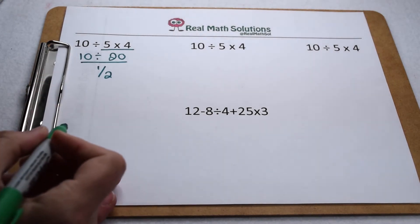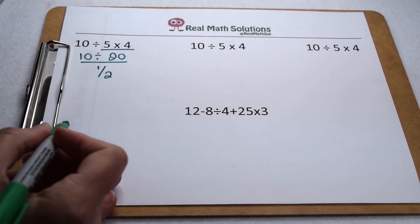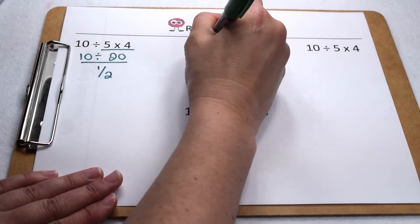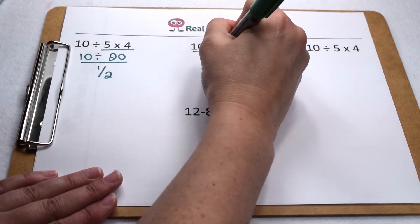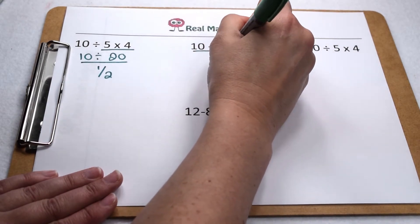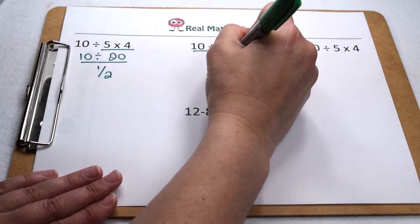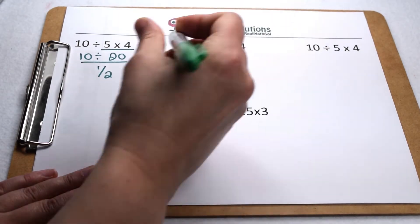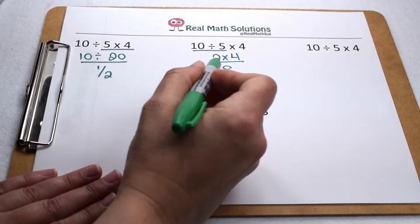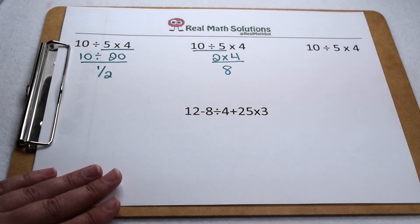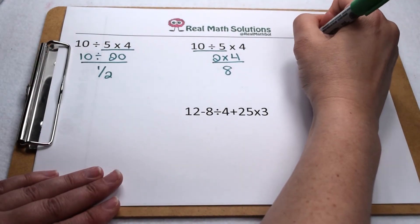Now we're going to work from left to right with our order of operations. So 10 divided by 5 gives me 2, which leaves me 2 times 4. 2 times 4 gives me 8. Well, 1 half and 8 are two very different values. So let's test it out once more by changing everything to fractions and try multiplying by the reciprocal.